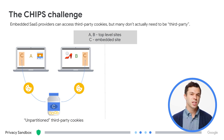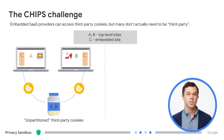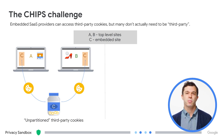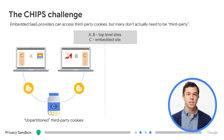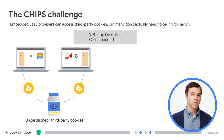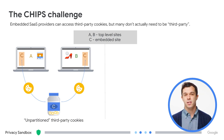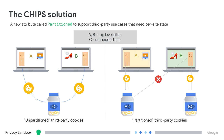For example, embed C could be a mapping provider that sets my preferred store location on site A. But when I navigate to site B, that same mapping provider embedded there may know my location. Embed C needs to be able to store that information in cookies, but doing that today would allow C to track users across sites. With CHIPS, C is declaring that it's not trying to use cookies from that shared cookie jar. Instead, as seen on the right, it now has partitioned or isolated cookie jars per top-level site.